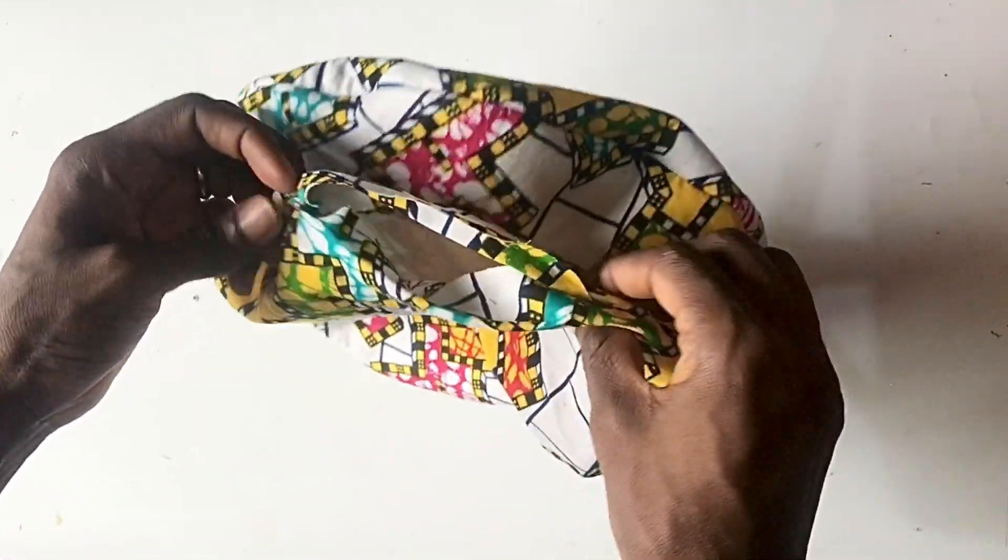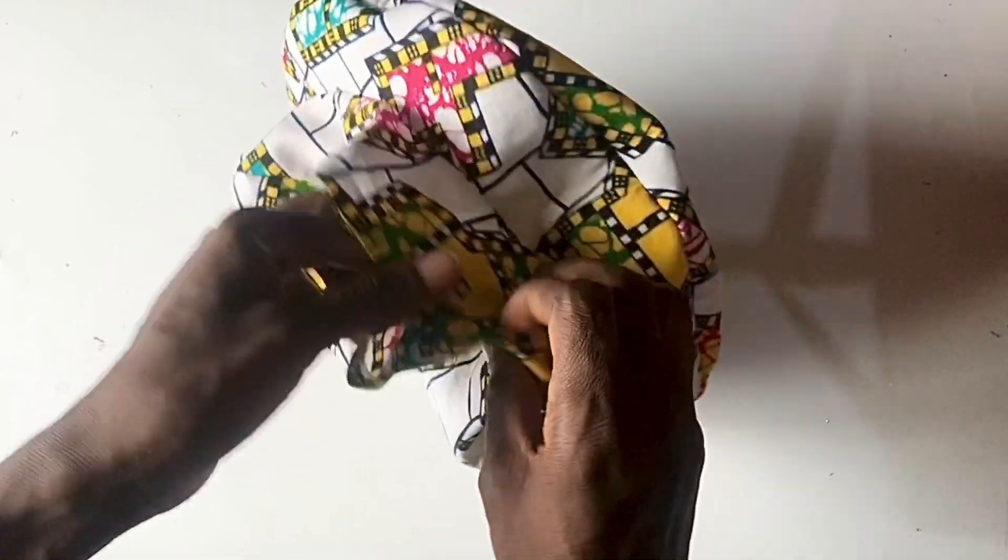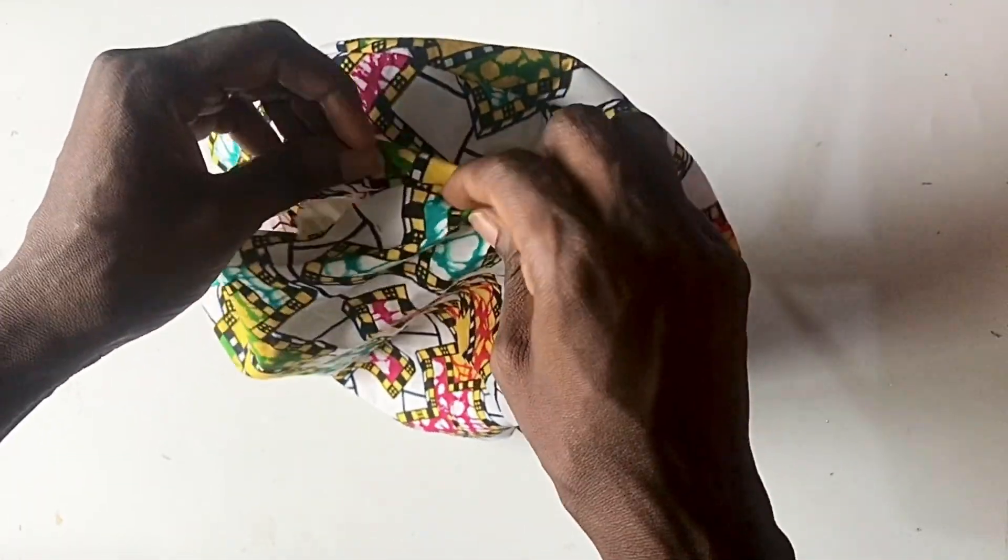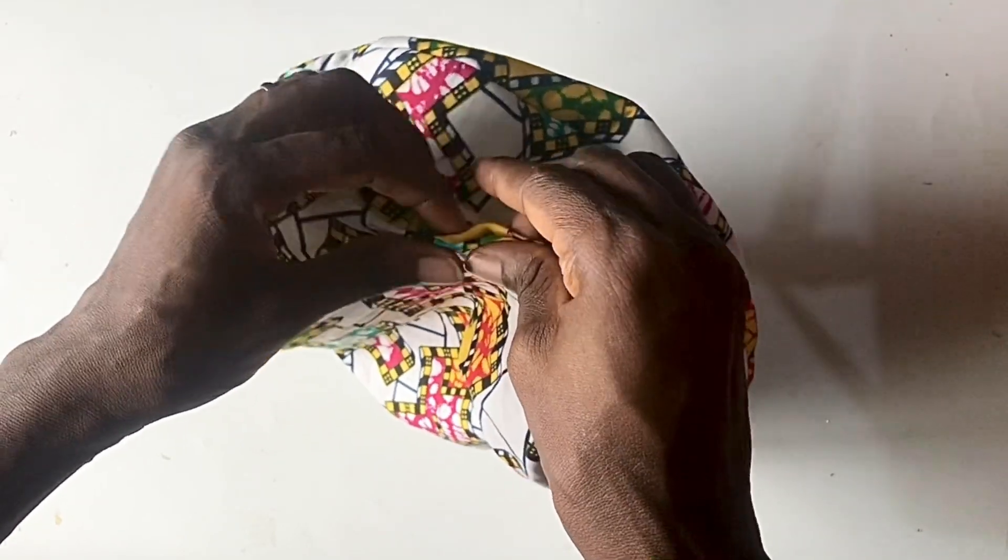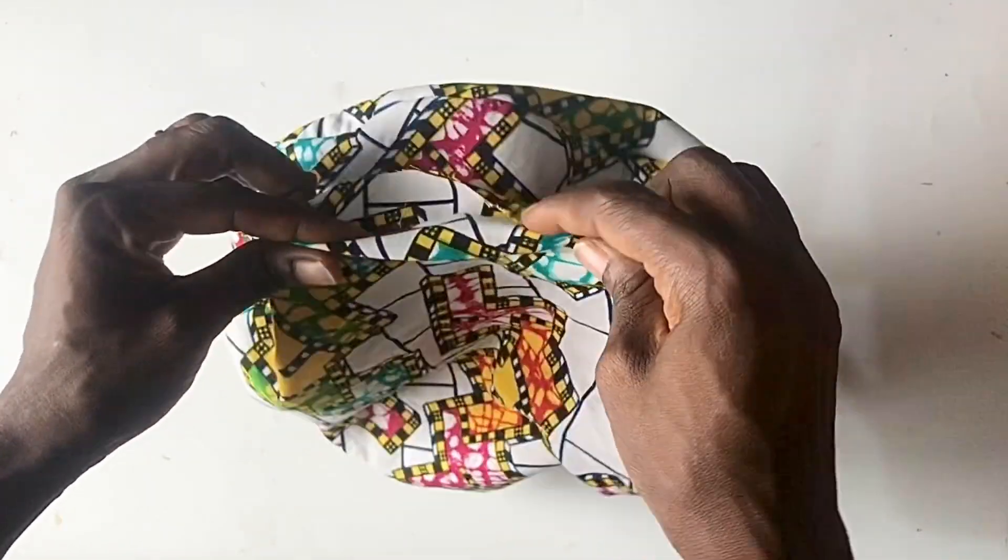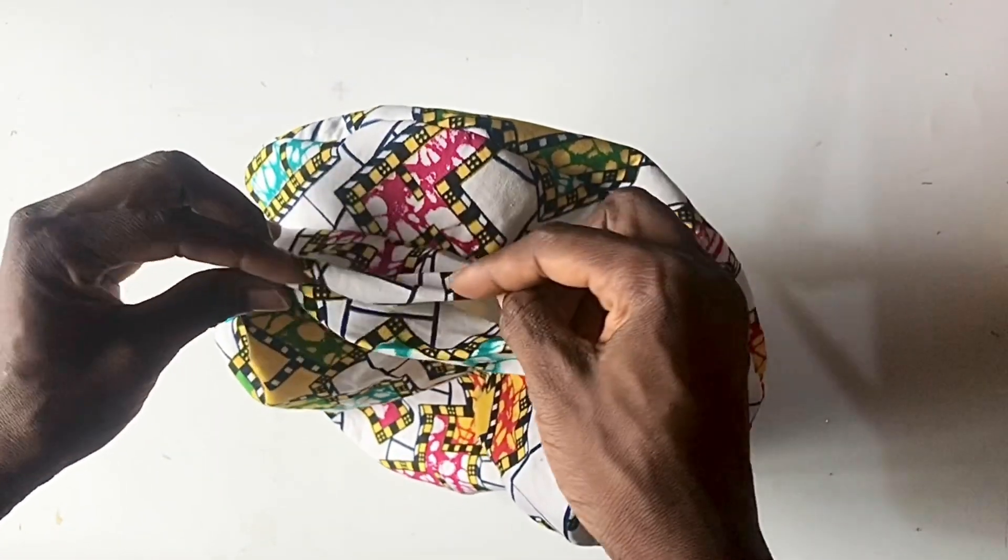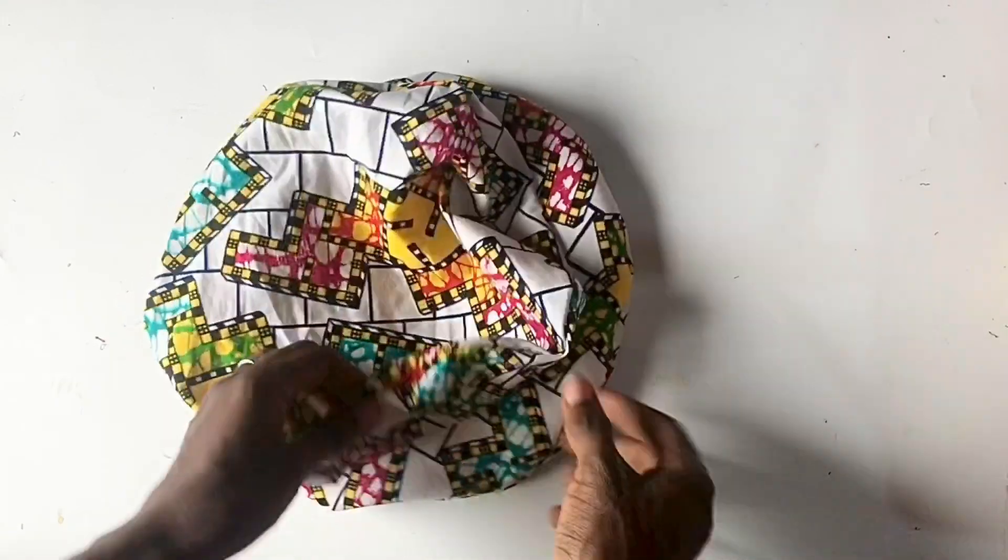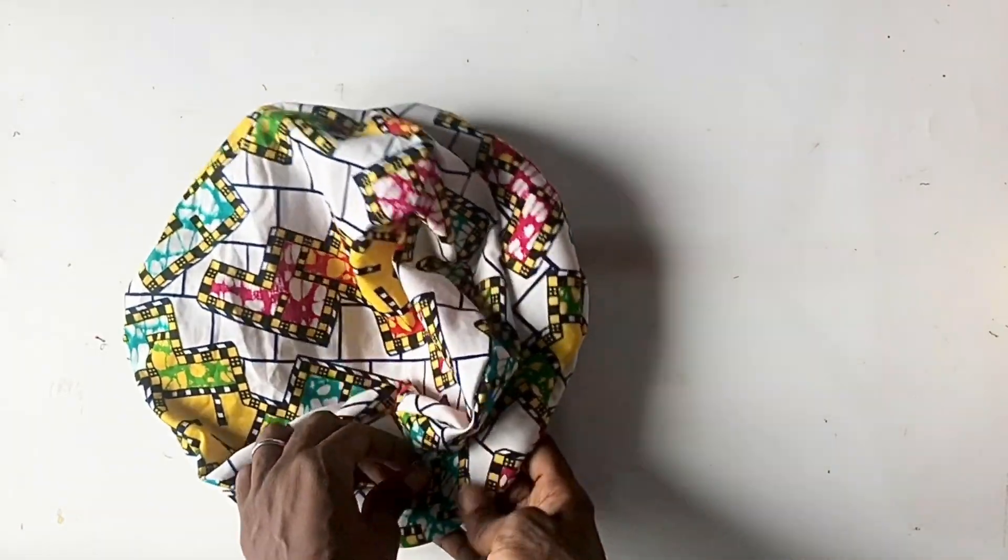For this opening, you can decide to use your machine to close it or you can do it with needle and thread, whichever one is okay for you. Then after you do that you would iron the edge of the beret.